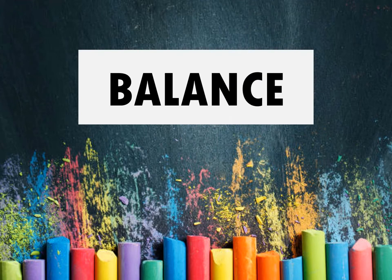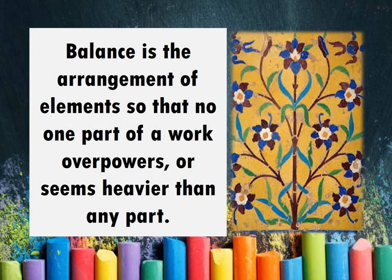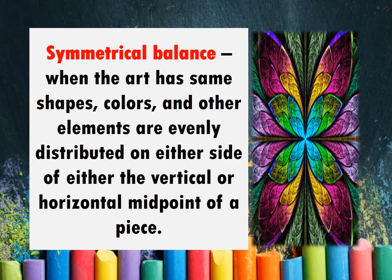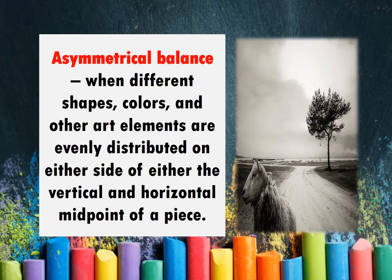The next principle of art is balance. Balance is the arrangement of elements so that no one part of a work overpowers or seems heavier than any other part. Balance can be symmetrical, asymmetrical, and radial symmetric. When an artwork has the same shapes, colors, and other elements evenly distributed on either side of the vertical or horizontal midpoint of a piece, there is symmetrical balance. Asymmetrical balance is the opposite of symmetrical balance.